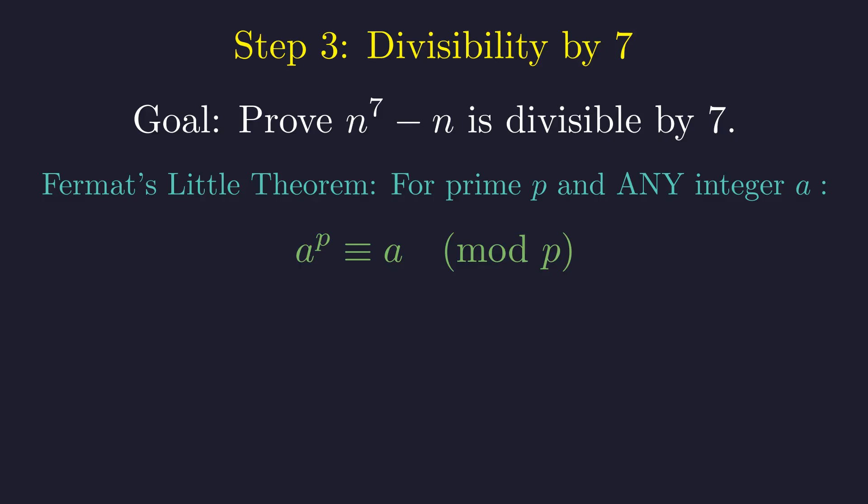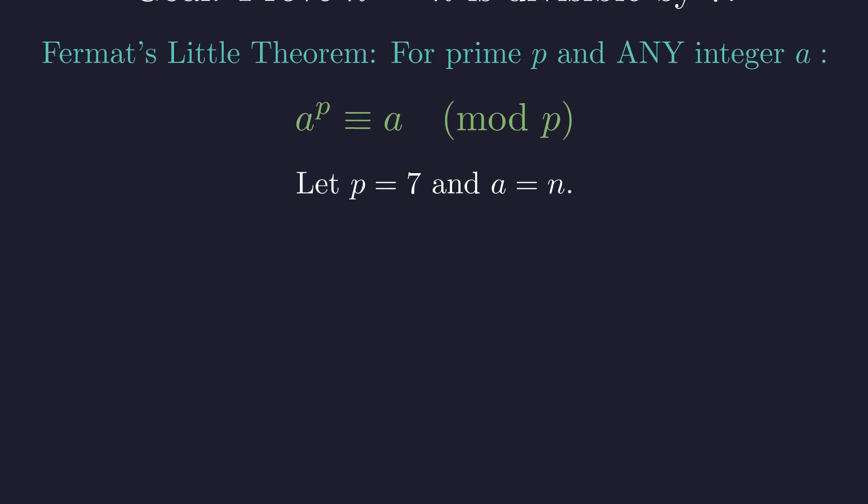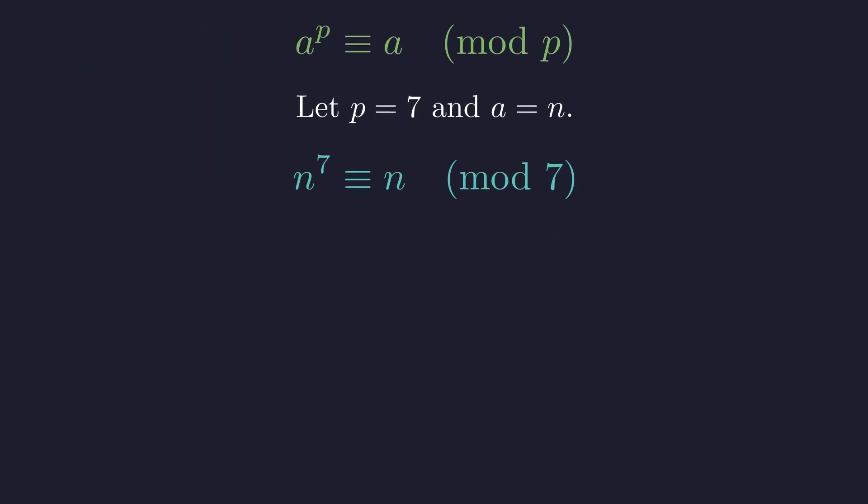In our situation, the prime p is 7, and our integer a is just n. Let's plug these in. So Fermat's Theorem tells us that n^7 is congruent to n modulo 7. Congruent just means they have the same remainder when divided by 7. If we subtract n from both sides, something nice happens. We get n^7 - n is congruent to 0 modulo 7. And that's exactly what we wanted.